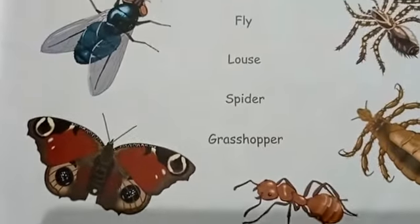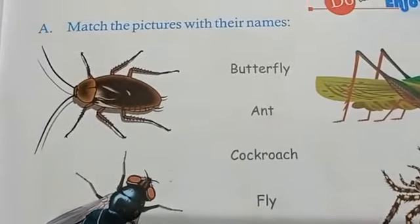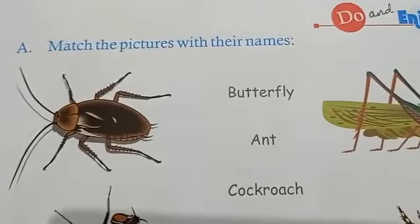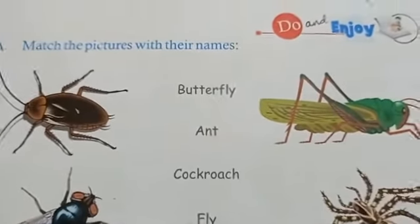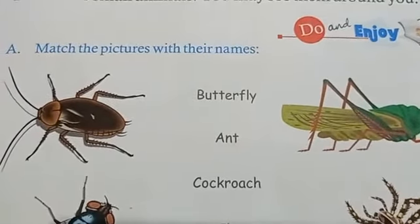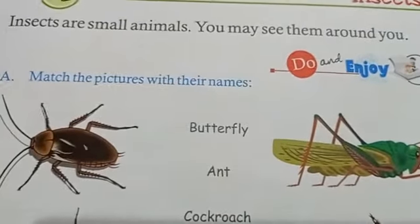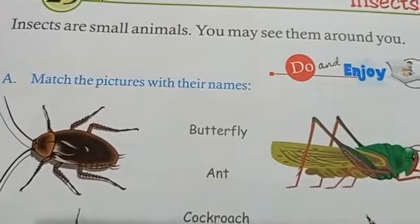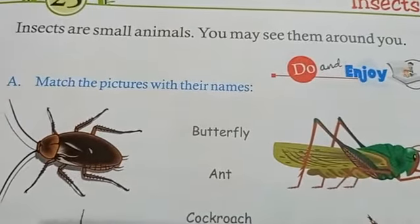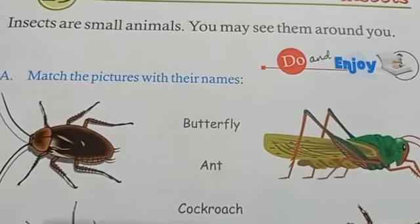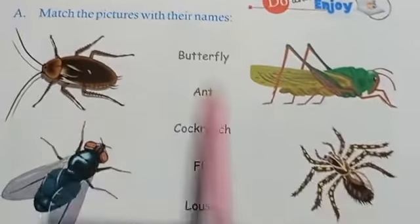So insects are small living beings. Some insects can fly, and most of the insects have six legs. You may see many insects around you every day.